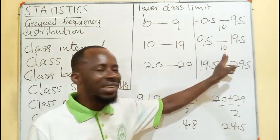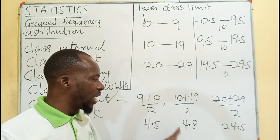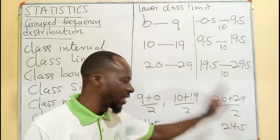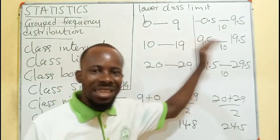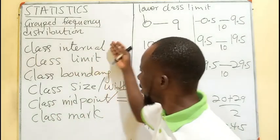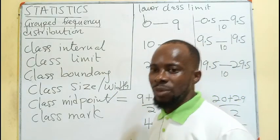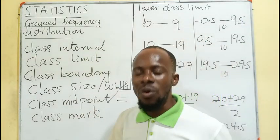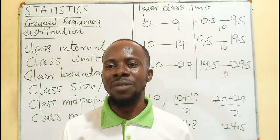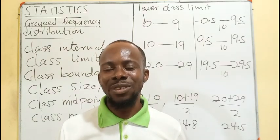For example, 4.5 plus 10 gives 14.5; 14.5 plus 10 gives 24.5; 24.5 plus 10 gives 34.5, and so on. The concepts of class interval, class limit, class boundary, class size, and class mark have now been explained, as these are used in solving questions on graphical representation or central tendency of a frequency table. Thank you for watching — like, share, and comment. Come back for more tutorials. Bye!